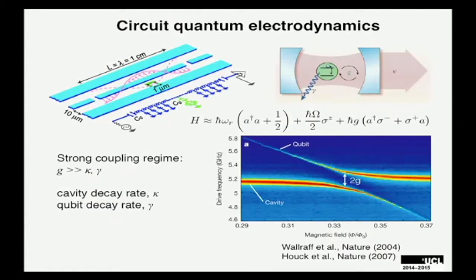Very briefly, circuit QED basically consists of a superconducting transmission line resonator, and at the antinodes of this resonator where you have maximum electric field, you place your atom or qubit. The idea is that these qubits or artificial atoms can then interact with microwave photons inside these cavities. This is quite analogous to more traditional cavity quantum electrodynamics, where you have actual atoms interacting inside a high-finesse optical cavity.